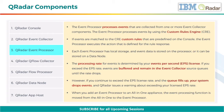Each Event Processor has local storage, and event data is stored on the processor, or it can be stored on a data node. The processing rate for events is determined by your events per second license. If you exceed the EPS rate, events are buffered and remain in the Event Collector source queues until the rate drops. However, if you continue to exceed the EPS license rate and the queue fills up, your system drops events, and QRadar issues a warning about exceeding your licensed EPS rate. When you add an Event Processor to an all-in-one appliance, the Event Processing function is moved from the all-in-one to the Event Processor.